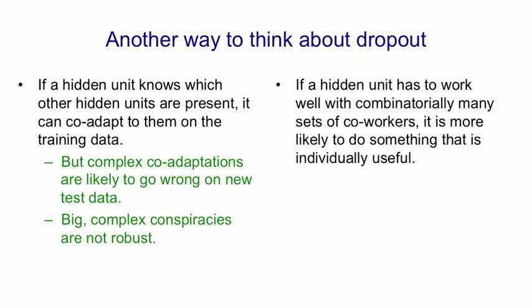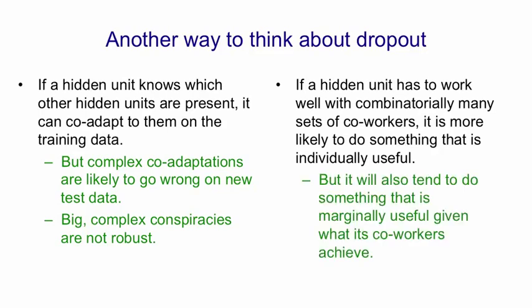And that makes it much more likely to do something that's individually useful rather than only useful because of the way particular other hidden units are collaborating with it. But it's also going to tend to do something that's individually useful and is different from what other hidden units do. It needs to do something that's marginally useful given what its co-workers tend to achieve. And I think this is what's giving nets with dropout their very good performance.